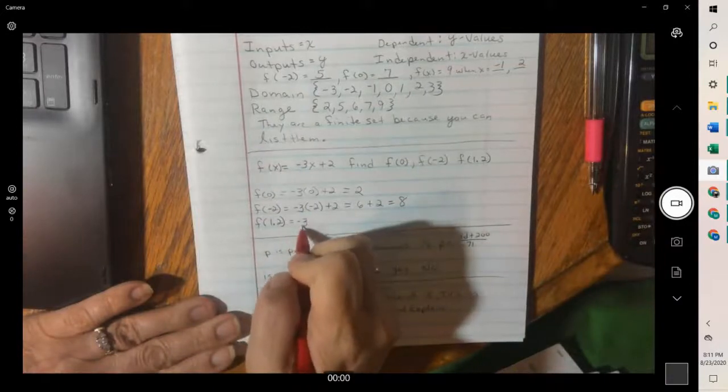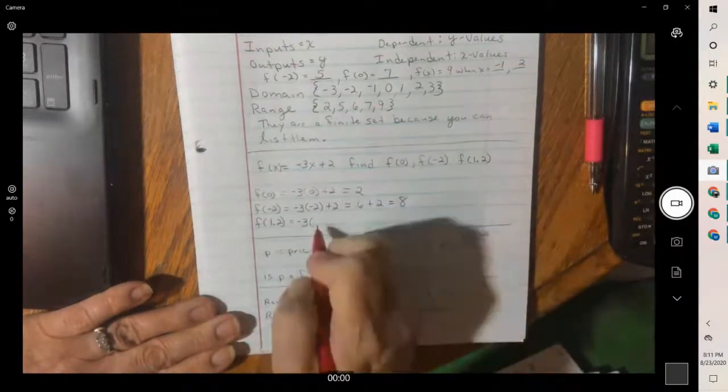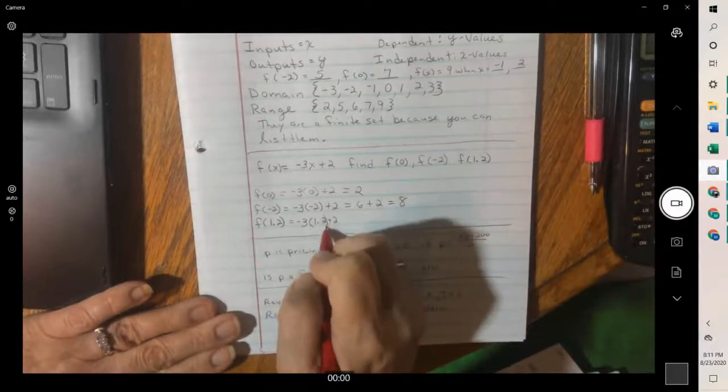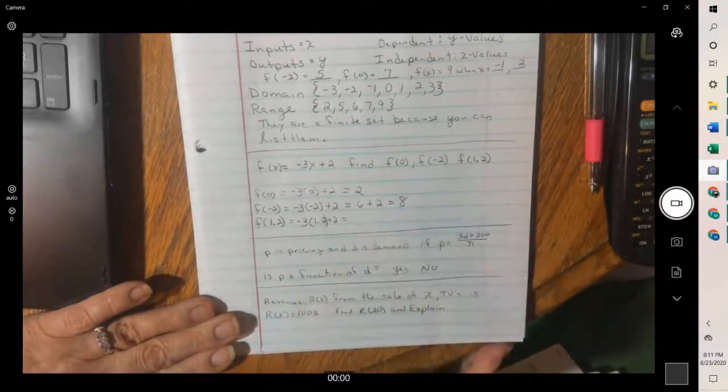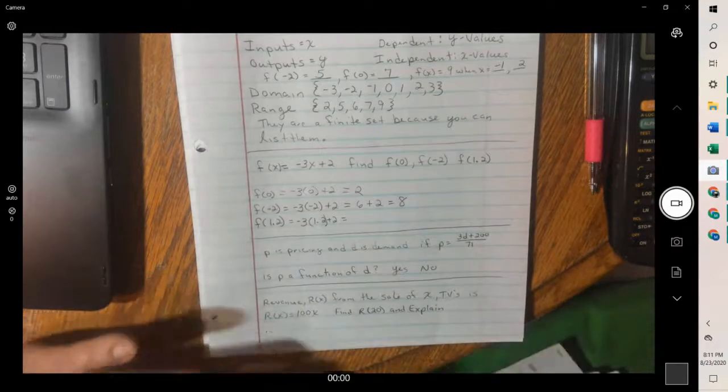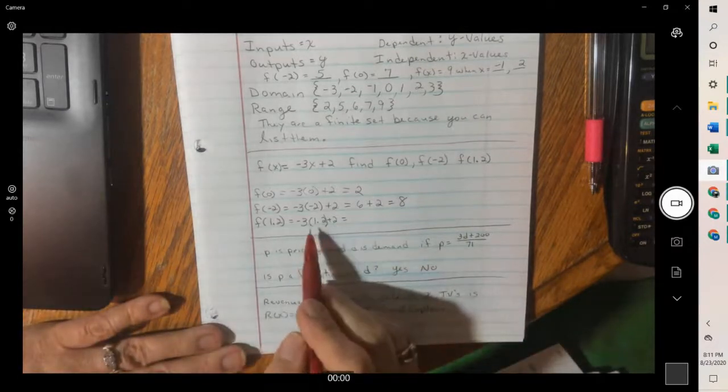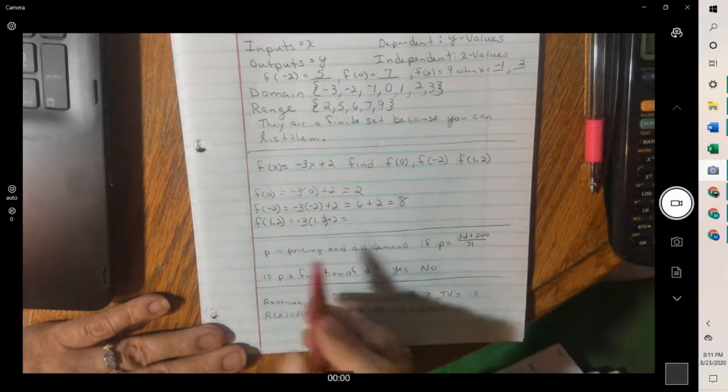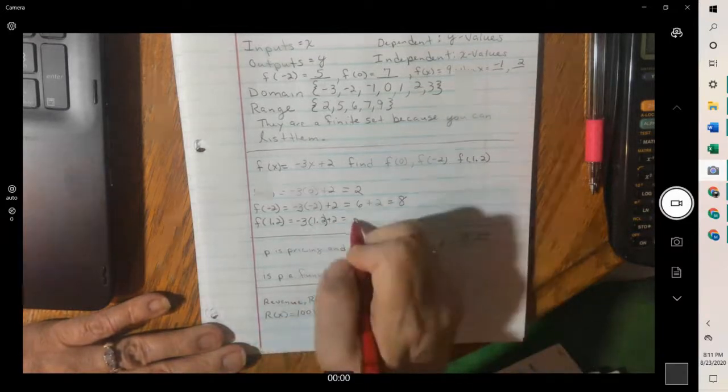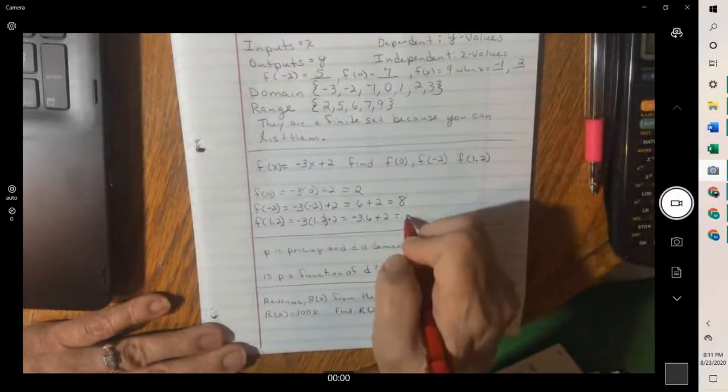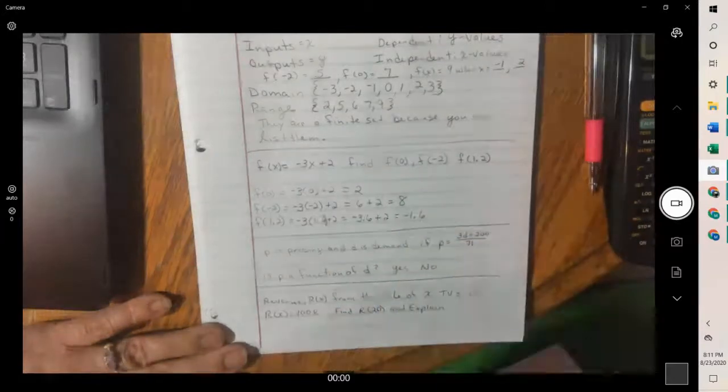And the last one, plugging in 1.2. Remember, always follow order of operation. Please excuse my dear Aunt Sally. In this case, we just have multiplication and addition. So multiplication's first. Negative three times 1.2 would be a negative 3.6 plus two or a negative 1.6.